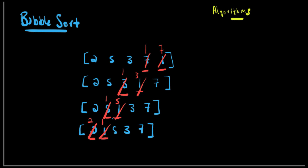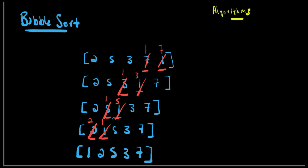So we've gotten through one iteration, and I'm going to output the final numbers for that one iteration: one, two, five, three, and seven. So that's the first iteration. As you can see, the numbers aren't completely sorted — one and two are sorted, but not the rest. So we're going to do it all over again. The algorithm is going to keep reiterating until all the numbers are sorted.